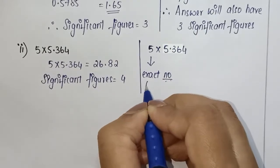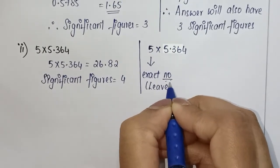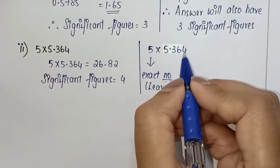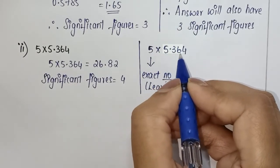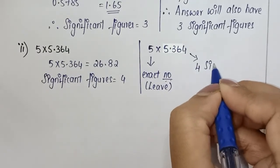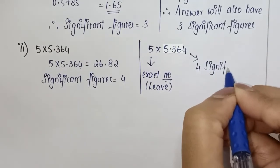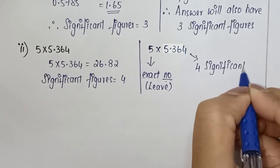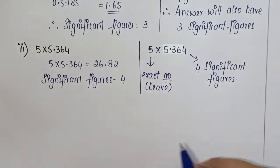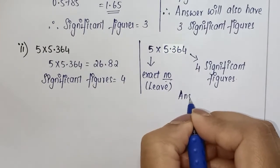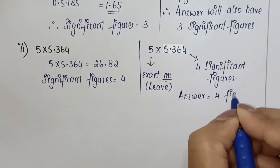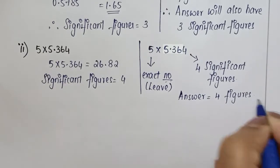So we're going to leave it off. But this number 5.364 is the second term. If you count the number of significant figures, this has four significant figures. Therefore, the answer for this particular question will also have four significant figures.